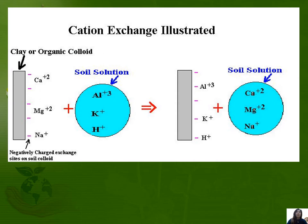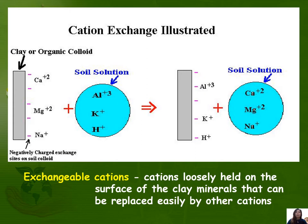This figure illustrates how the cation exchange process is happening in the soil. Exchangeable cations are the cations loosely held on the surface of the clay mineral that can be replaced easily by other cations in the soil solution. In this illustration, you can find the ions of calcium, magnesium, and sodium that are adsorbed on the clay surfaces, and these cations can be replaced or exchanged with aluminum, potassium, and hydrogen ions found in the soil solution.